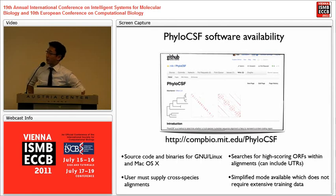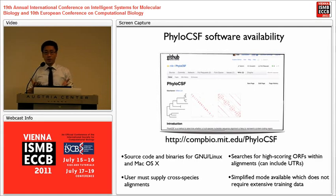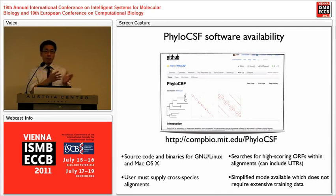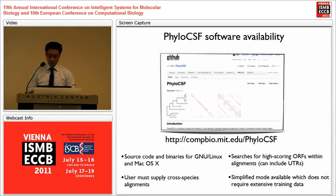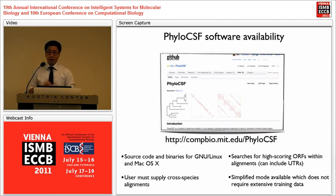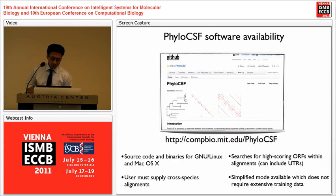The software is available on GitHub with binaries for Linux and Mac OS X as well as source code. You need to supply the alignments yourself — in mammals these can be tens of gigabytes, so the software is a component of a pipeline rather than something you run directly on an mRNA sequence. The software can search for high-scoring open reading frames within an alignment including UTRs, and has a simplified mode requiring very little training data — more like the classical dN/dS test — useful when pre-trained parameters aren't yet available for your species of interest.